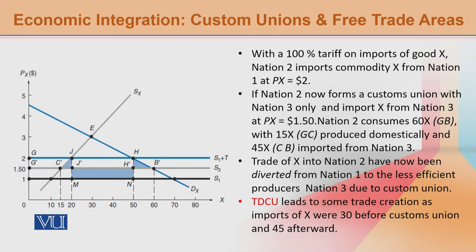You have a supply curve and a demand curve. Equilibrium is at point E where price is 3. The commodity is 30 — domestically produced and consumed.